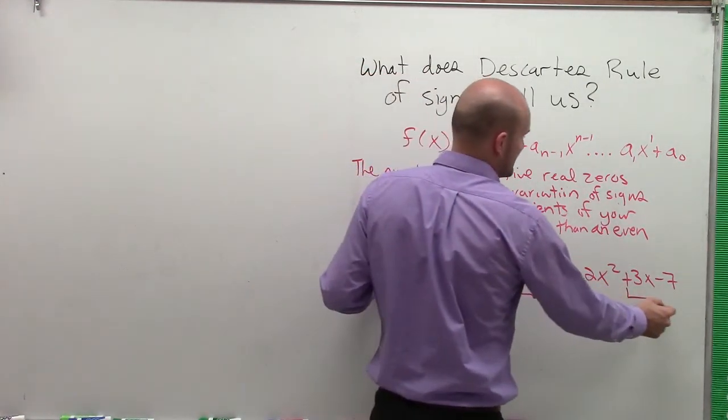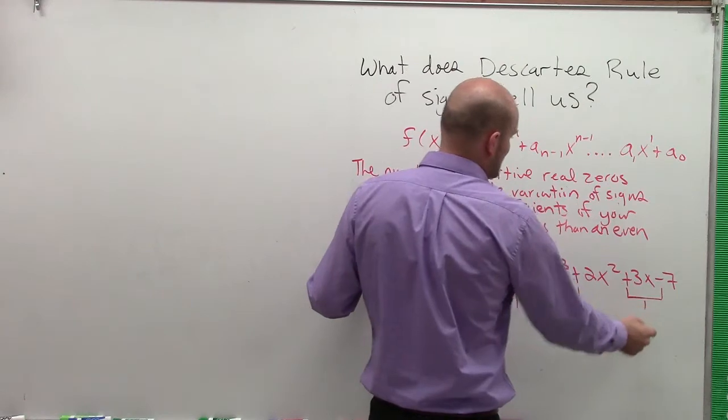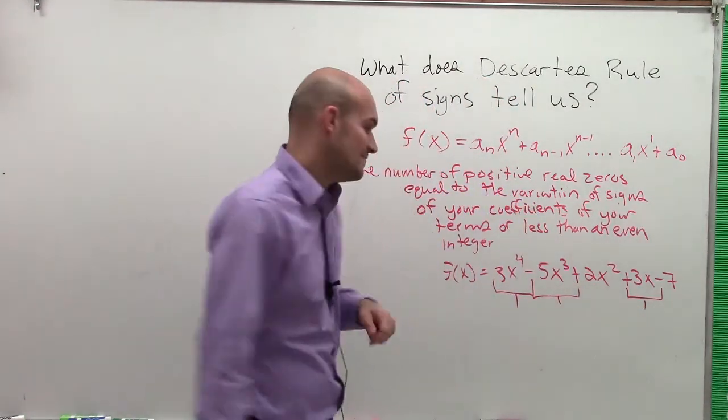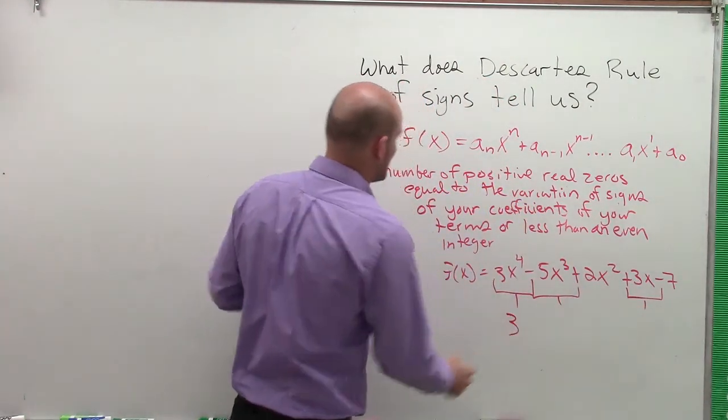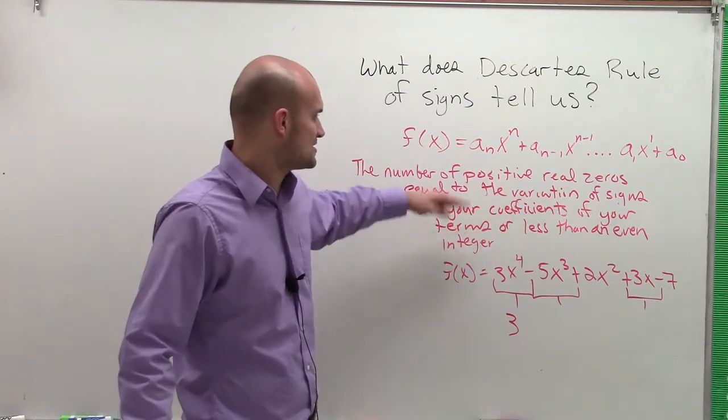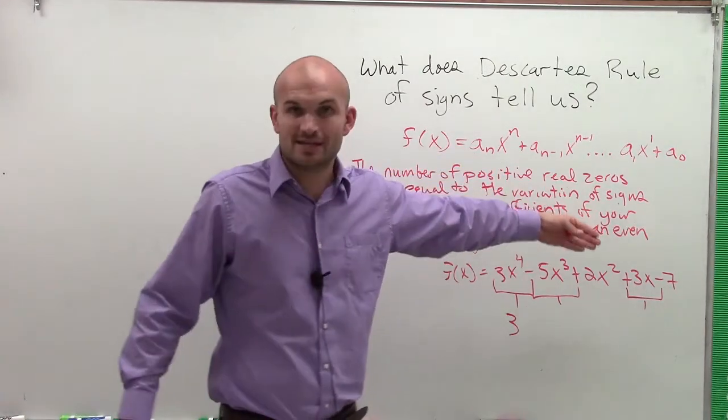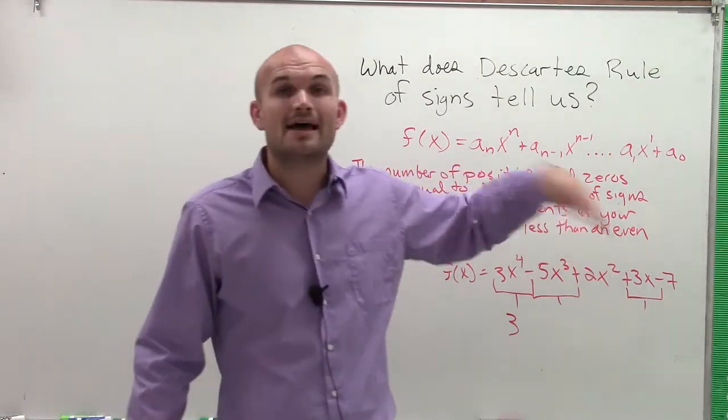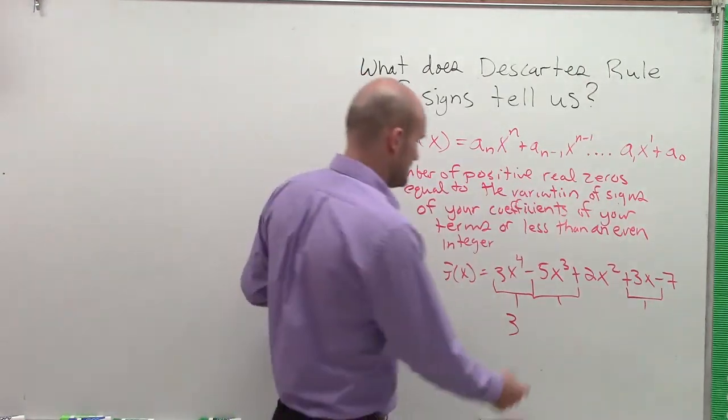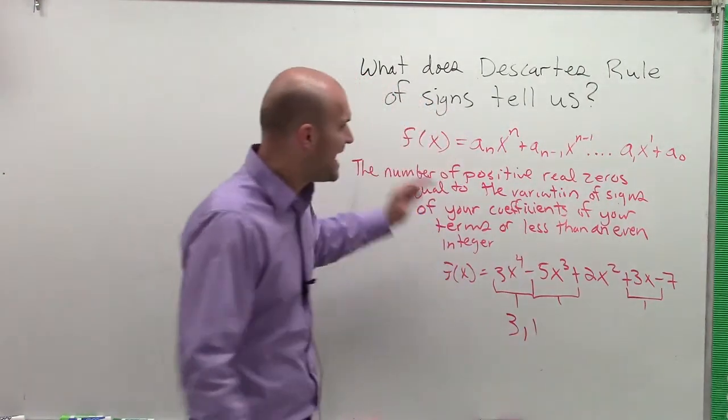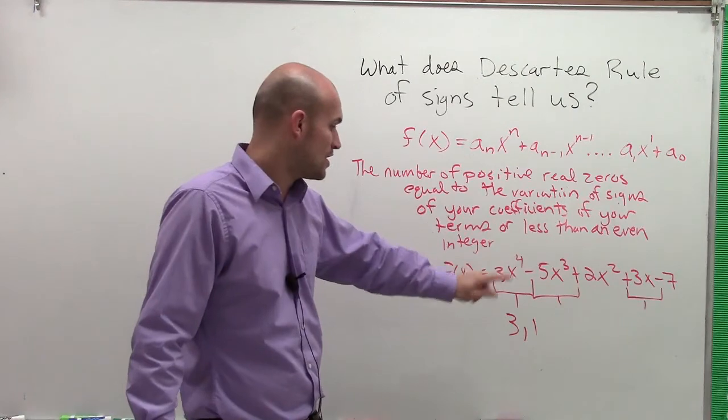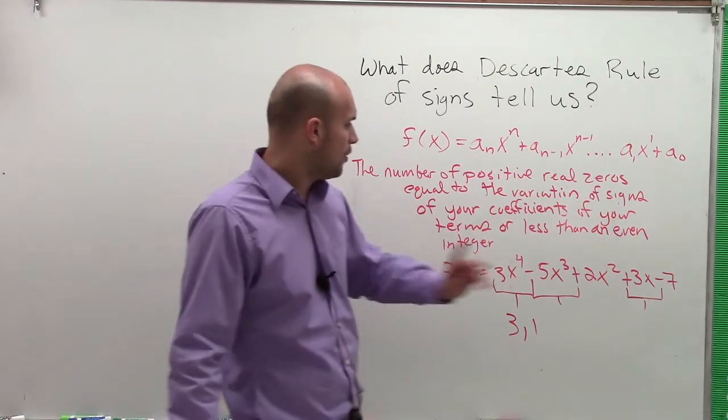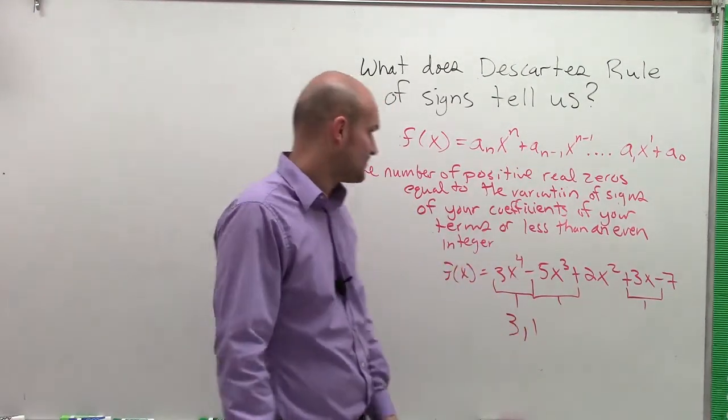And here I have a positive and a negative. So therefore in this polynomial I have three variations. However, it's not just the number of variations, it's also less than an even integer. So I could take 3 and then subtract 2, which would give me 1. So the number of positive real zeros is either 3 positive real zeros or 1 positive real zero.